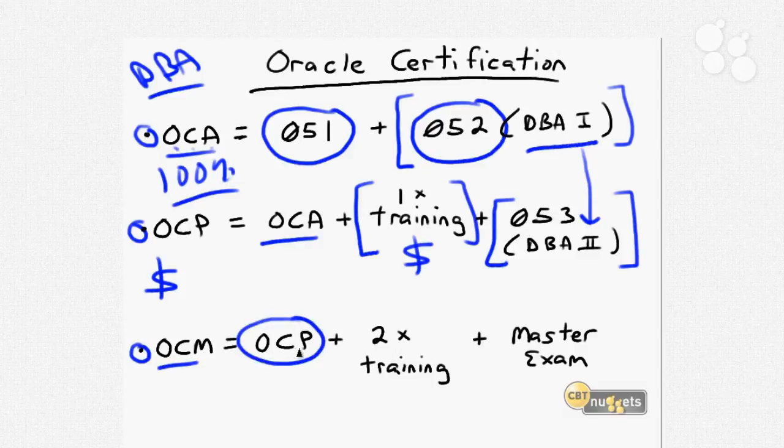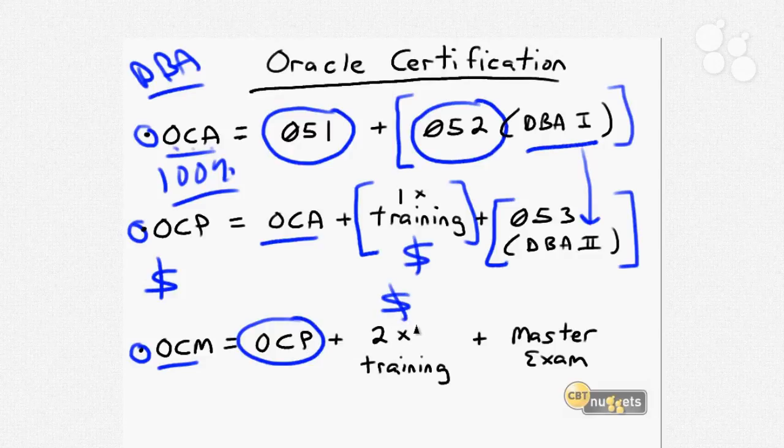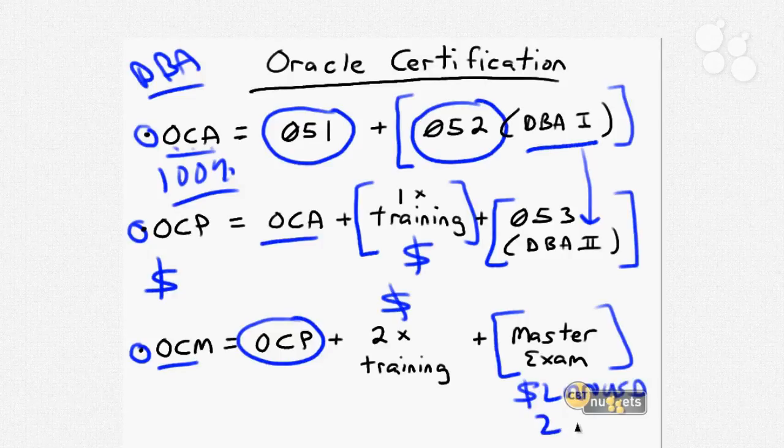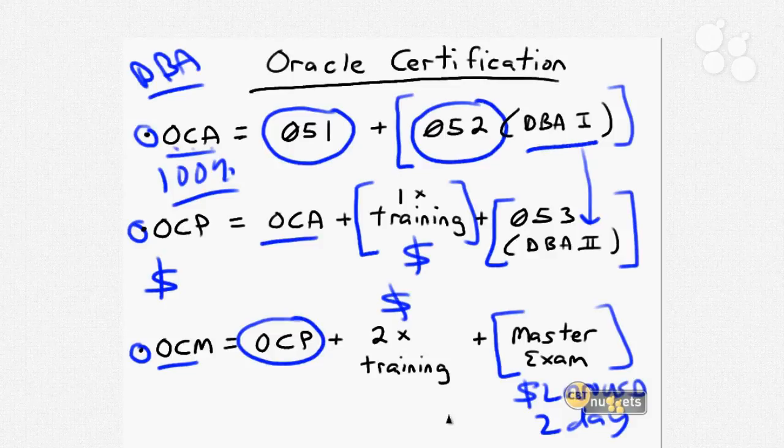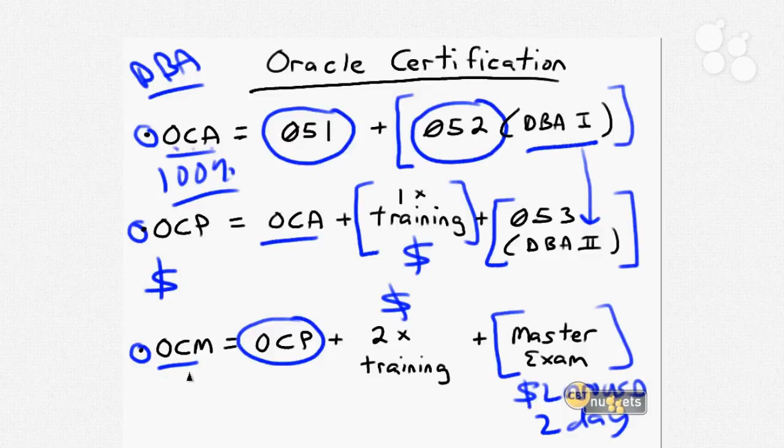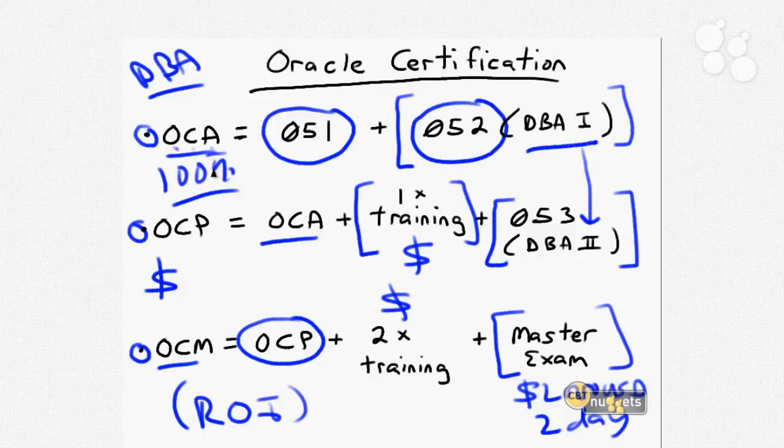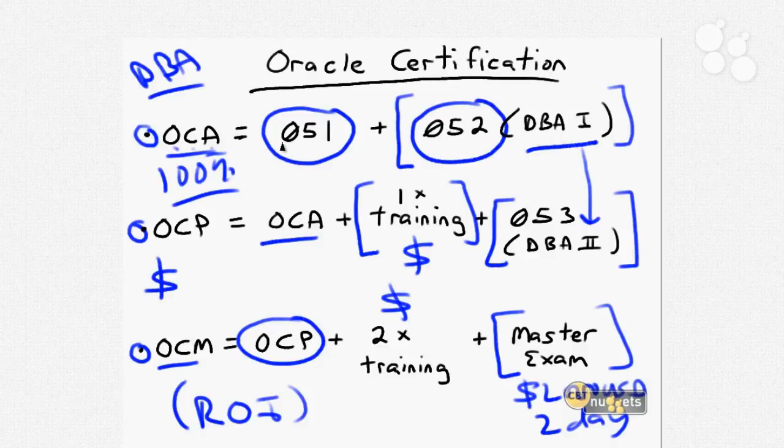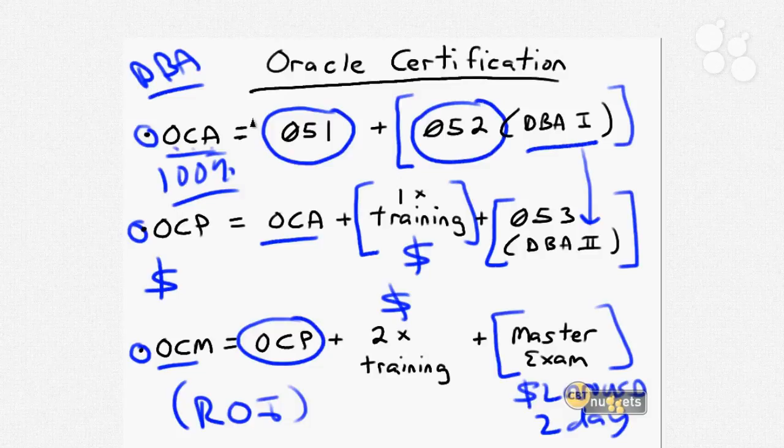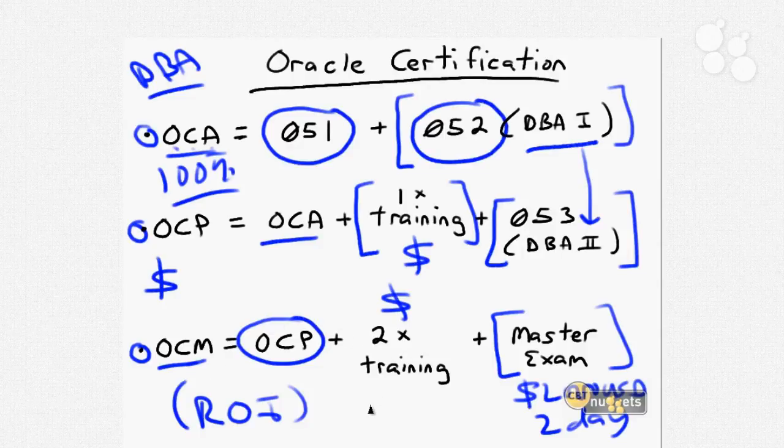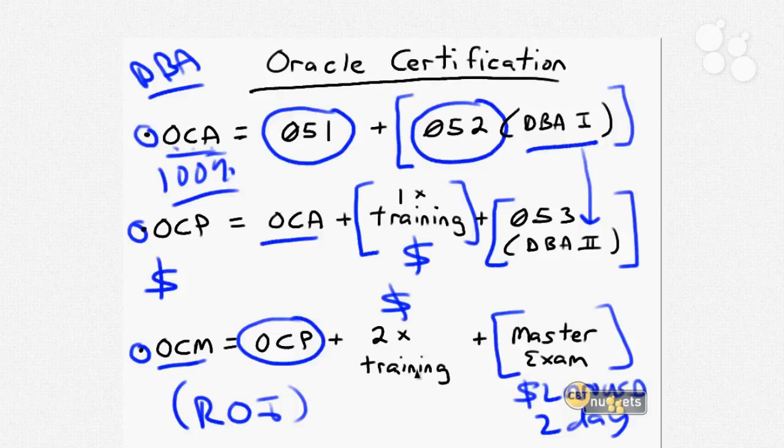The entry-level prerequisite for OCM is that you hold the OCP. You have to shell out for two official Oracle training classes, and then there's the master exam, which as of this recording in June 2011 costs $2,000 USD and is actually a two-day performance-based exam where you're performing DBA tasks in an Oracle lab environment. That's pretty rigorous. This whole OCM track is a huge investment in time and money. You always want to consider ROI, return on investment. What do you hope to get out of attaining Oracle Certification? Once you get up to the OCM level, most of the time your employer will pay for this.